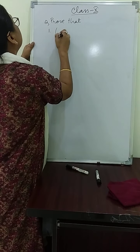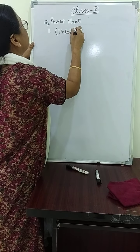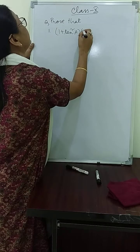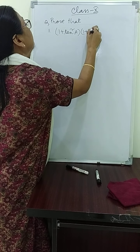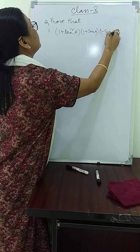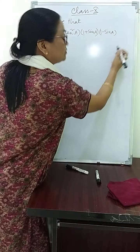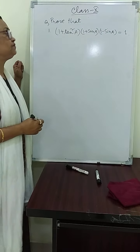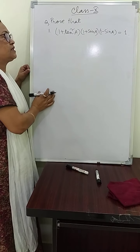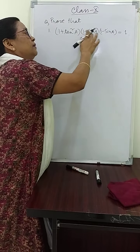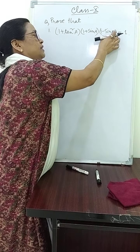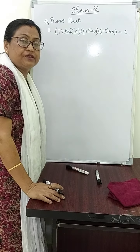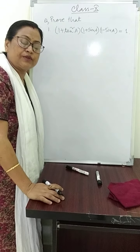Question number one: Prove that (1 + tan²A) multiplied by (1 + sinA) multiplied by (1 − sinA) is equal to 1. We need to prove that the left-hand side equals 1.